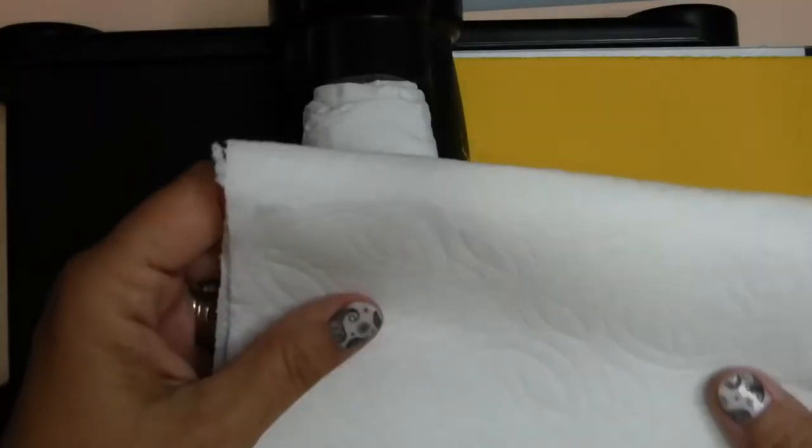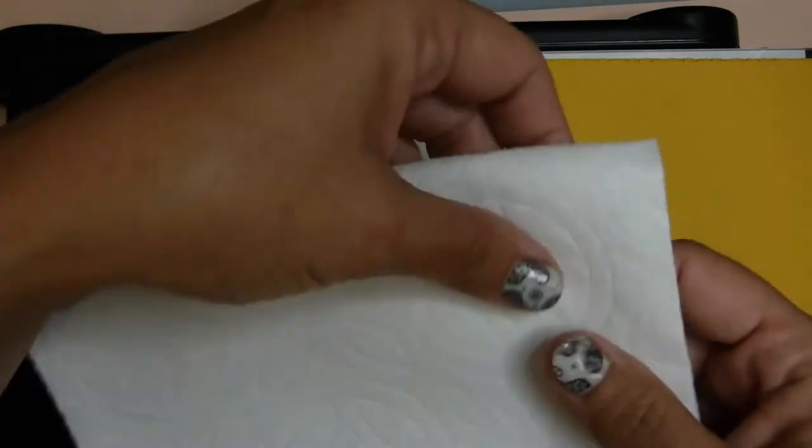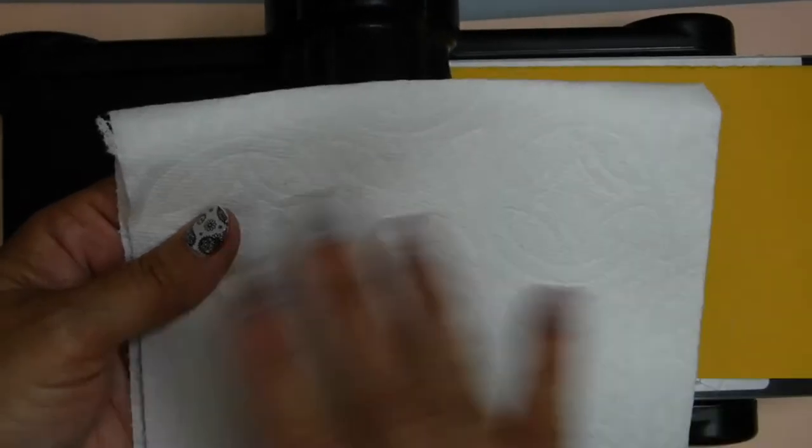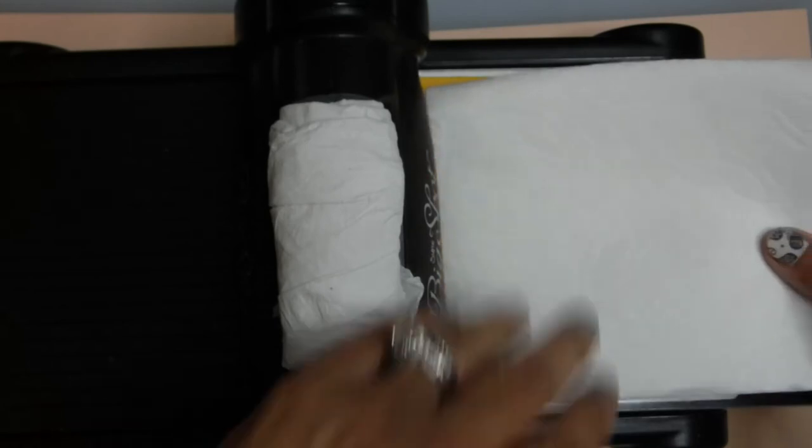And you'll feel it out, how many times you need to run it through to emboss it. If I would run this through just with one set of paper towel, it might not be enough. I might need two or three sheets or layers. You'll figure it out once you know how your machine works.